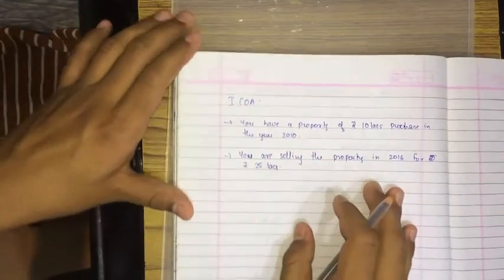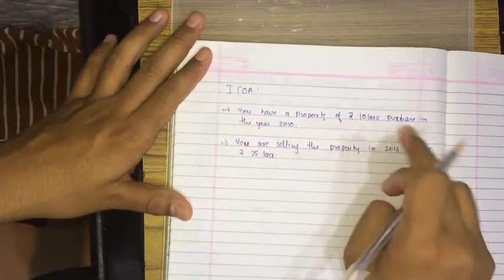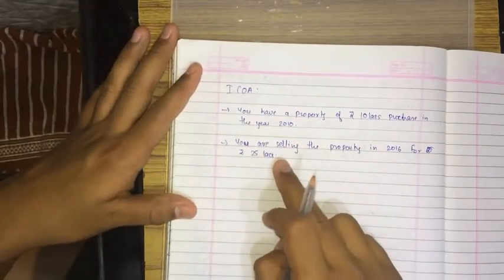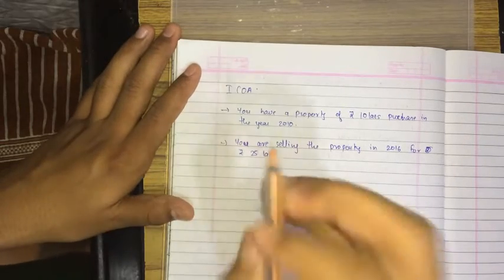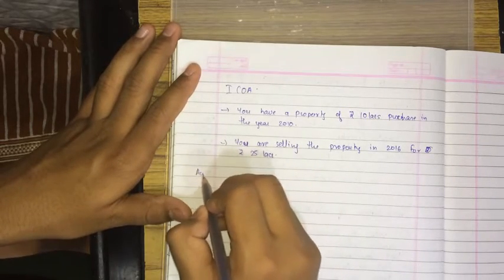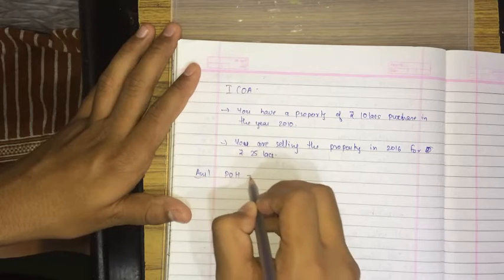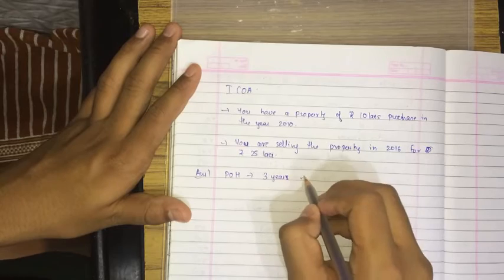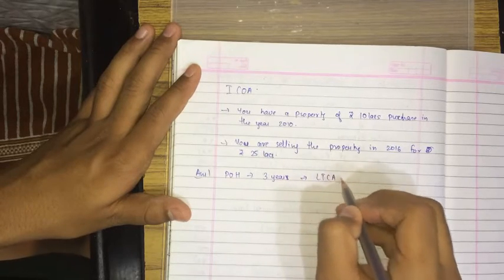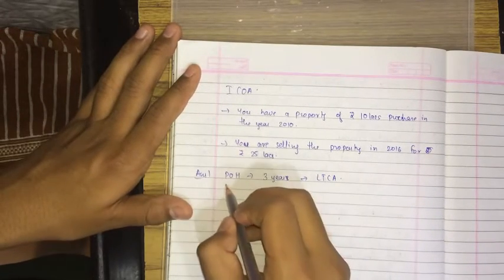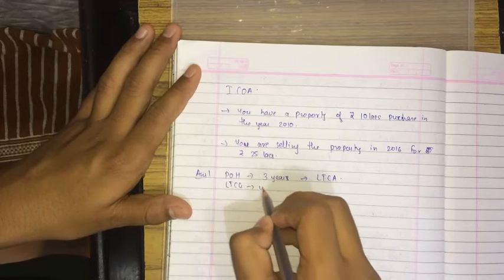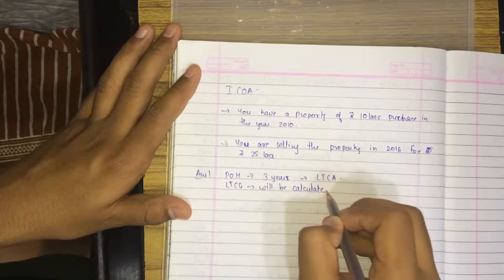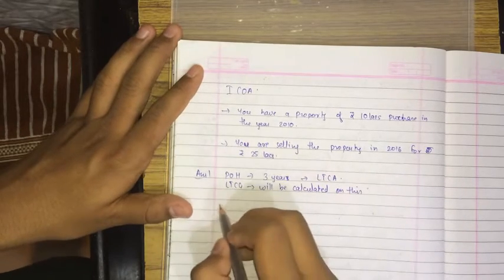Here is an example: you have a property of rupees 10 lakhs purchased in the year 2010 and you are selling the property in 2016 for 25 lakhs. The first thing to determine is the period of holding — is it more than 3 years? Yes, it is more than 3 years, so it is a Long Term Capital Asset, and Long Term Capital Gain will be calculated.